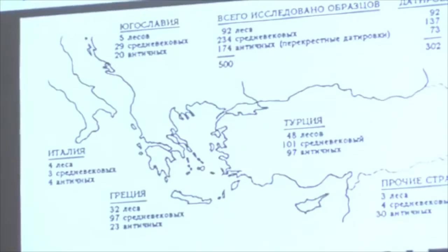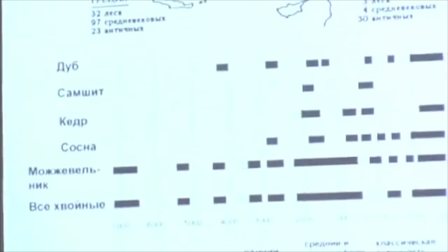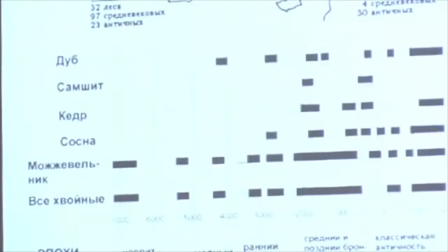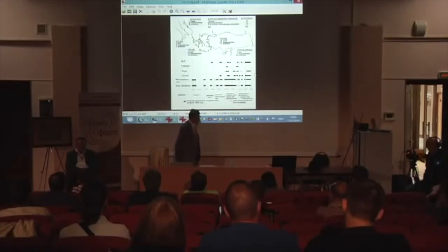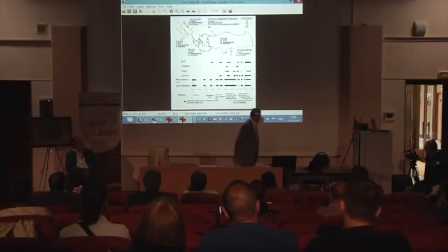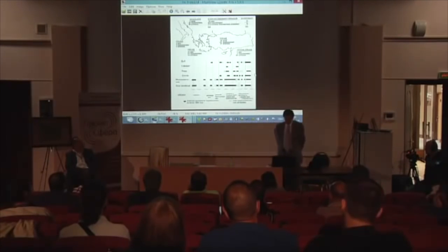What you see now is an actual dendrochronology graph. It contains many white spots. It features few kinds of trees and since they almost come from the same area, these graphs are very difficult to make. And because they are broken — they are not continuous — dendrochronology is becoming a very subjective method of dating.